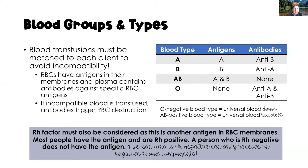Let's start with blood groups and types. Blood transfusions must be matched very specifically to the client to avoid incompatibility reactions. We have four blood types: A, B, AB, and O. Each has an antigen or no antigen, as in type O, and an antibody or no antibody, as in type AB. In type A, there is an A antigen and an anti-B antibody. In type B, there are B antigens and an anti-A antibody. In type AB, there are both A and B antigens and no antibodies. In type O, there are no antigens, but anti-A and anti-B antibodies are present.